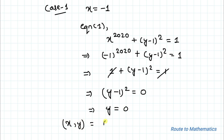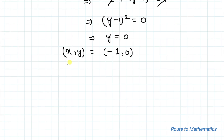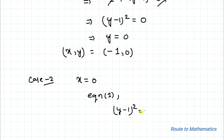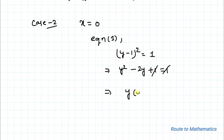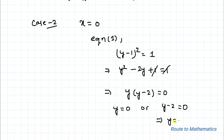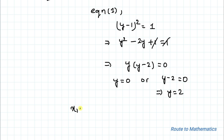So in Case 1 we found the solution (x, y) equals (minus 1, 1). In Case 2, for x equals 0, substituting into equation 1 gives (y minus 1) squared equals 1, which expands to y squared minus 2y plus 1 equals 1. The 1s cancel, giving y(y minus 2) equals 0, so y equals 0 or y equals 2. For x equals 0 we have solutions (0, 0) and (0, 2).